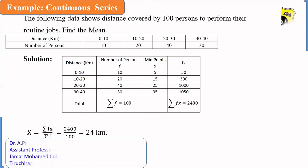Here, we use the formula for the discrete series. That is, arithmetic mean of x, which is equal to x̄ equals summation of f into x divided by summation of f. We take the midpoint of every class interval, which is x. So, here we prepare the following table to execute further. Distance in kilometer: 0 to 10, 10 to 20, 20 to 30, 30 to 40. Number of persons is considered as frequency, that is 10, 20, 40, 30.